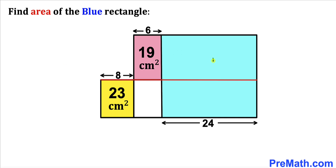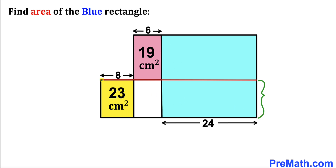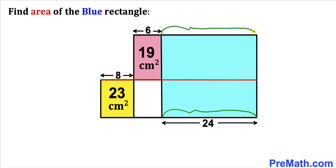I have divided this blue rectangle into two parts by drawing a horizontal red line such that this height is the same as the height of the pink rectangle, and this height is the same as the height of the yellow rectangle. We know this horizontal length is 24 cm, so this horizontal length is also 24 centimeters.